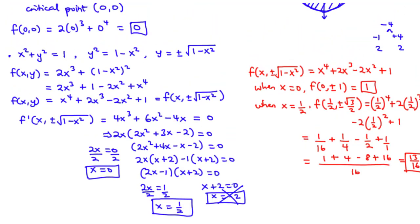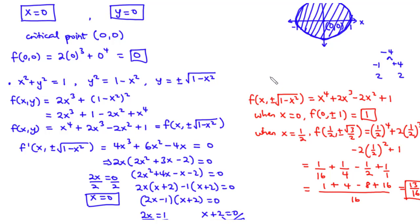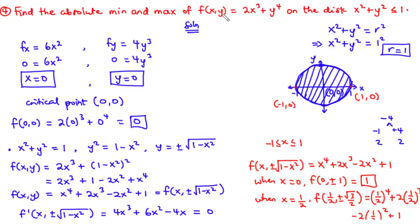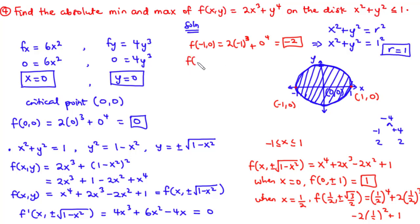We also consider the endpoints of the x interval, which is negative 1 ≤ x ≤ 1, giving endpoints (−1, 0) and (1, 0). f(−1, 0) = 2 times (−1) cubed plus 0 to the power 4 = negative 2. f(1, 0) = 2 times 1 cubed plus 0 to the power 4 = 2.